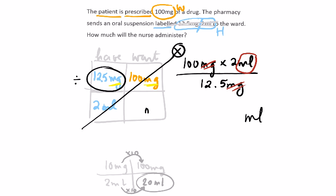Let's do the calculation. 100 times 2 is 200. Then 200 divided by 12.5 — 12.5 is hard work, so we'll use the calculator since we already know the estimate. 200 divided by 12.5, or how many 12.5s go into 200 — we get the exact answer of 16 mils.